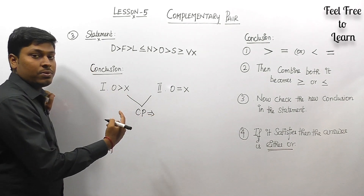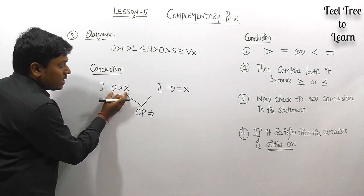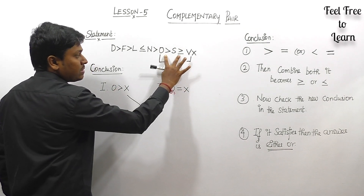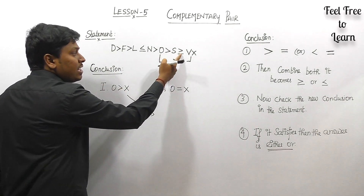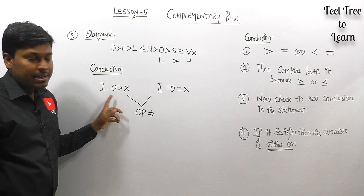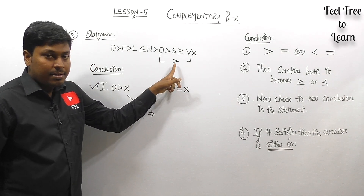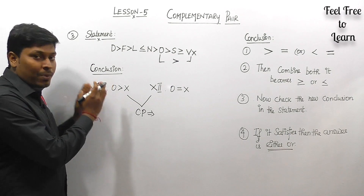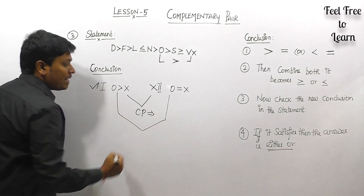Do not directly say 'either or' — check first. Conclusion one: O > X. Comparing O and X in the statement, the only common symbol is greater than (no equal to in that chain), so O > X. Conclusion one is true. Conclusion two: O = X — but comparing O and X we only get greater than, not equal to, so conclusion two is false.